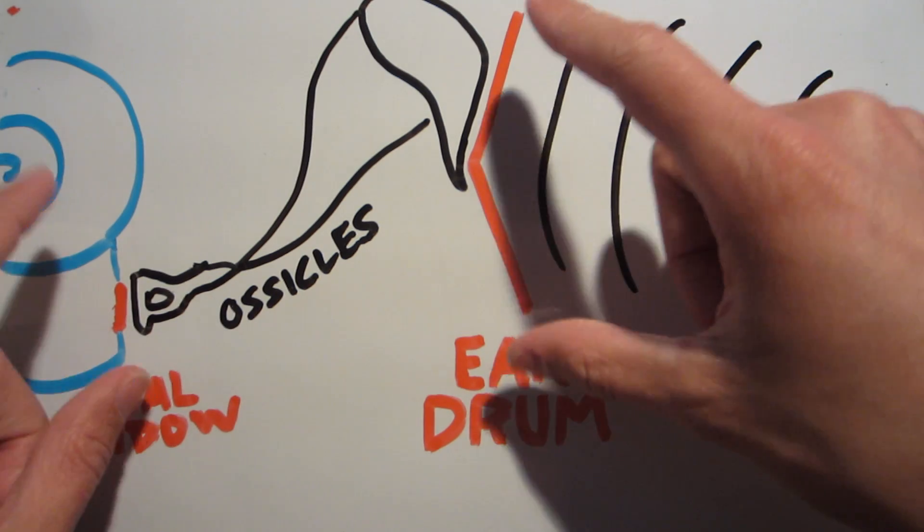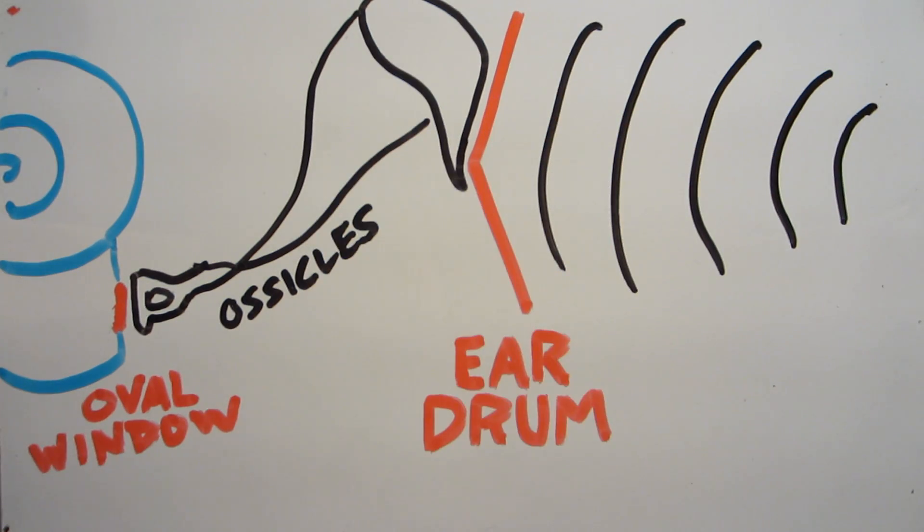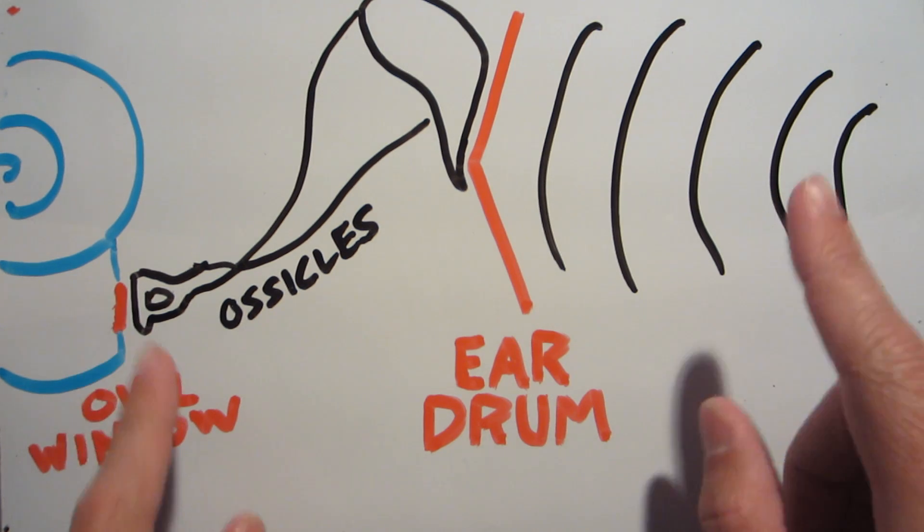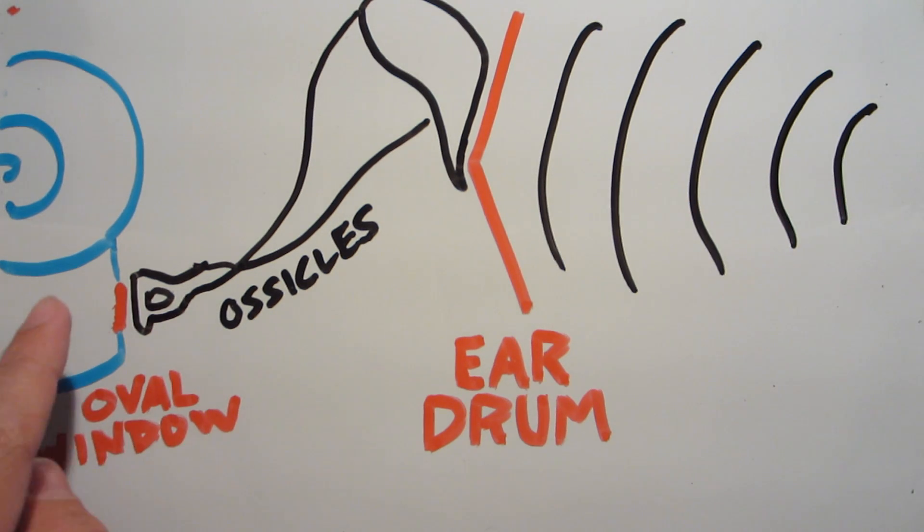So together, this difference in surface area, as well as the lever-like action of the ossicles, helps to bridge this impedance mismatch between the air and the fluid inside of your cochlea.